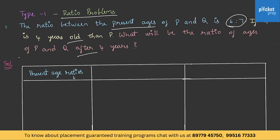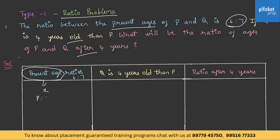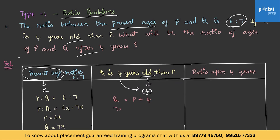Let us utilize this format in solving the previous problem. Divide the question into parts across columns. Let us assume the present age as x. Given ratio is 6 to 7, so P is to Q equals 6x to 7x. Therefore P equals 6x and Q equals 7x. Q is 4 years older than P — 'older' is the keyword, so we add 4. From the second statement, Q equals P plus 4, so 7x equals 6x plus 4, giving x equals 4.